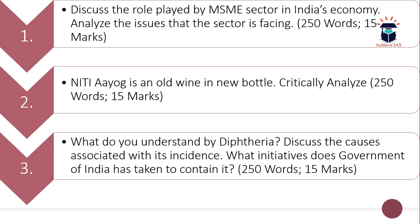The third question is: what do you understand by diphtheria? Discuss the causes associated with its incidence and what initiatives the Government of India has taken to contain it. You need to explain your understanding of diphtheria, the factors responsible for its incidence, and the government initiatives to control it. Word limit is 250 and maximum marks are 15.